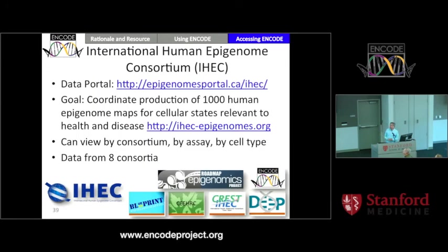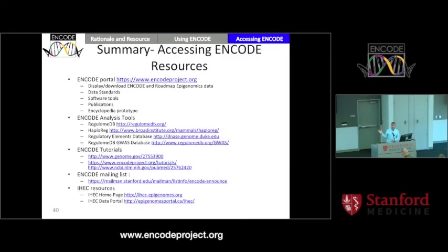I'd like to give a shout-out to our partners in the International Human Epigenomes Consortium. ENCODE is a member of this, as is the NIH Common Fund Project Roadmap Epigenomics. A bunch of like-minded projects are collecting epigenomic data across many cell types and sharing them through different mechanisms. The IHEC data portal and project summary are available, with lots of useful data there including a subset of the ENCODE data. We share tutorials from the project, analysis tools in the portal, and IHEC resources. I'd highlight the ENCODE mailing list — if you want to hear regular updates on the project, you can join this list.